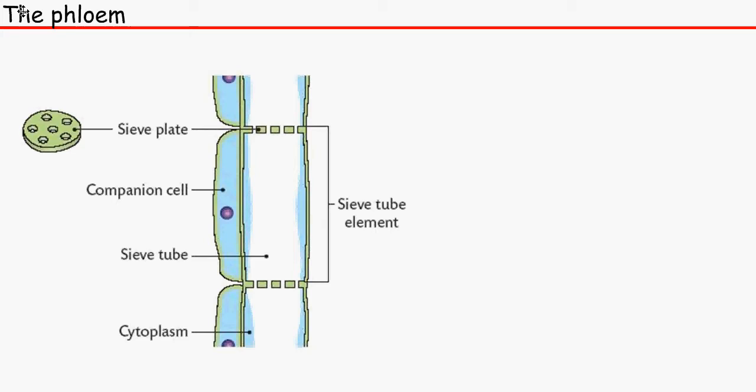So let's focus on the sieve tube elements first. The sieve tube elements aren't really true cells because they don't have a nucleus, which makes them prokaryotic, but it's still not prokaryotic as it's got little cytoplasm as well.